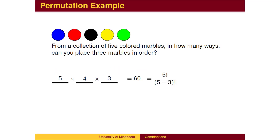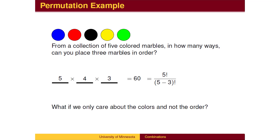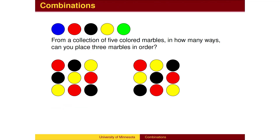For example, to put 3 colored marbles in order, we multiply the 3 numbers 5 times 4 times 3. But what if we don't care about the order, only the colors chosen? Here is one possible choice: red, black, yellow. These 3 colors make 6 permutations, but it is just one combination of colors.